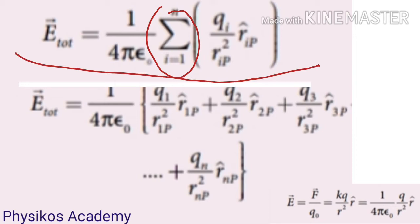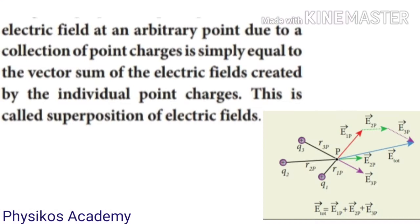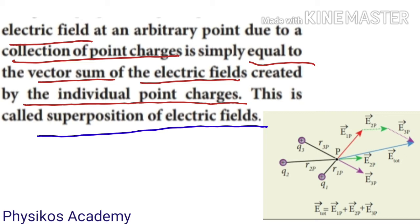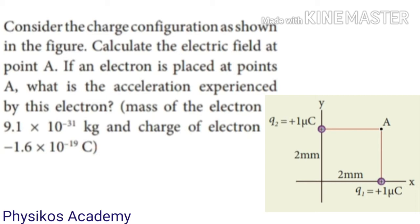So when there are more than two point charges, the total electric field is found using the superposition principle. All the individual electric field vectors are summed to get the total electric field. This is the same concept used for forces — all charges' electric field vectors are summed to get the total. Next we look at an example problem.